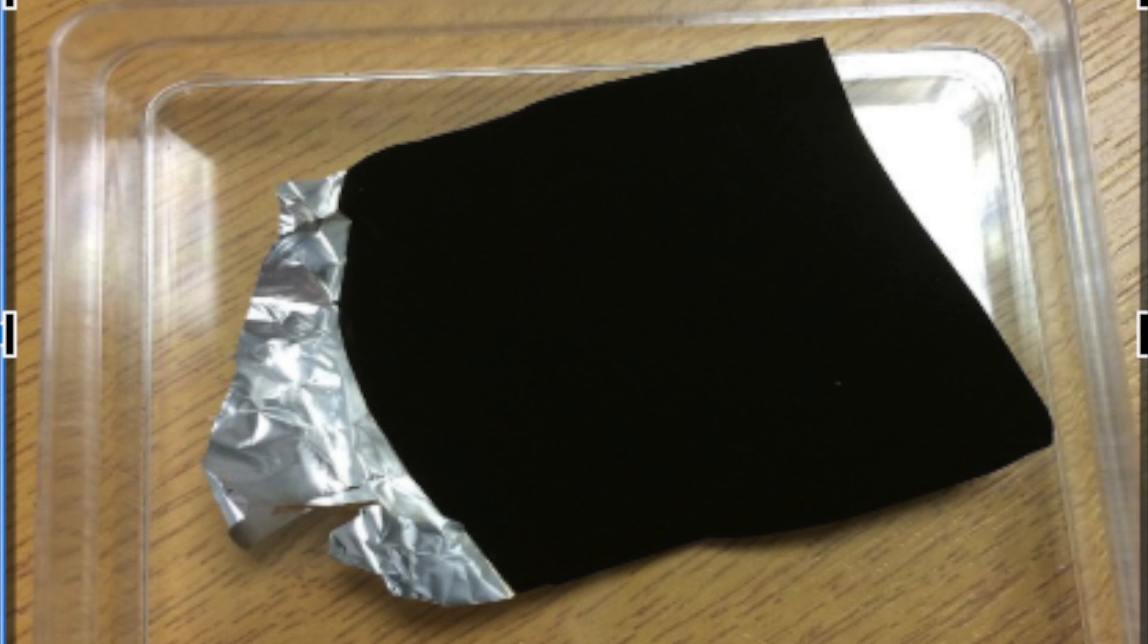Vanta Black is the new black. Vanta Black absorbs 99.965% of visible light, making it the world's new darkest material. At this degree of darkness, it is impossible to decipher when the material is folded or crumpled. This is Vanta Black on a crumpled piece of aluminum foil. Take note that you cannot see any of the folds or wrinkles.